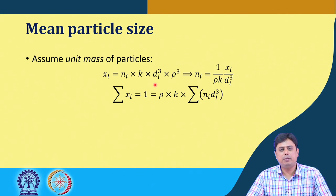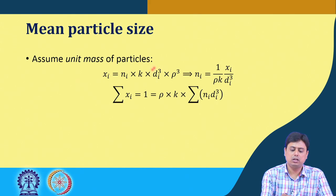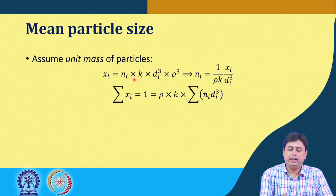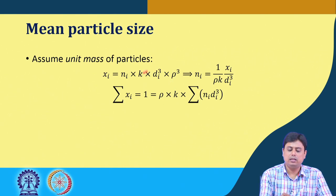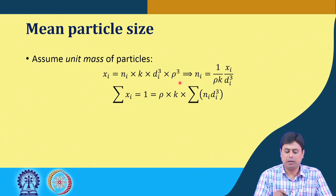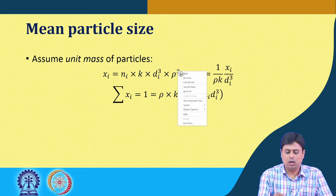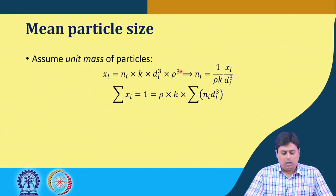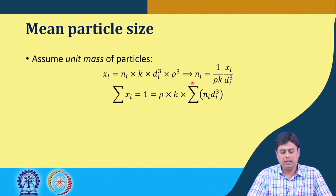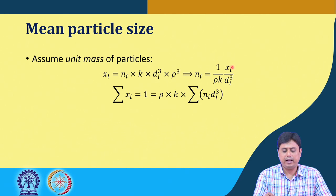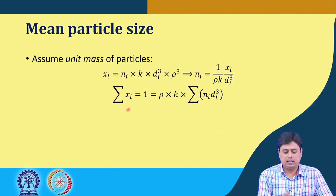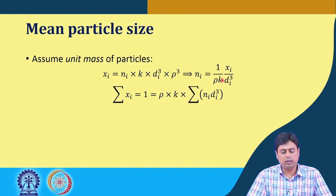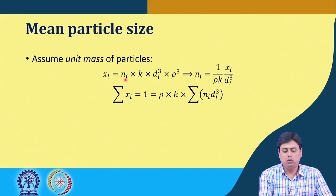Volume is proportional to the linear dimension to the power of 3, represented here by dimension d_i, and k is a constant depending on shape. For a spherical particle k = π/6; for a cube k = 1. It is written for a generic purpose involving number of particles, volume, and density. Therefore, n_i = (1/ρk) · x_i / d_i³. This conversion from mass fraction to number distribution is essentially important.